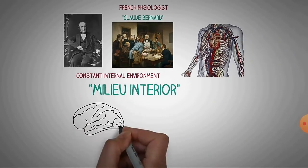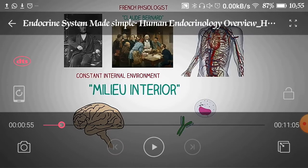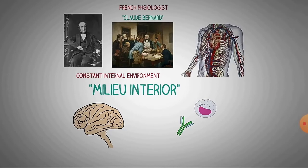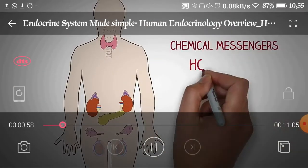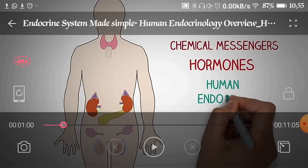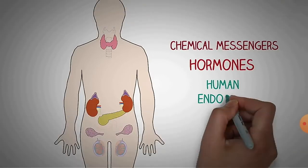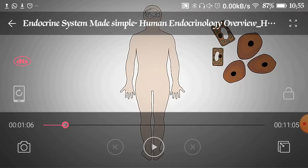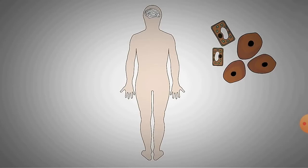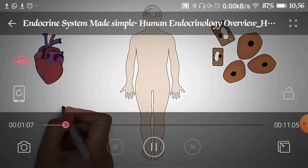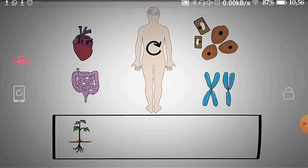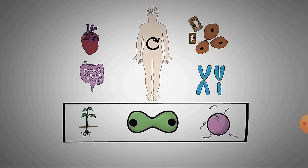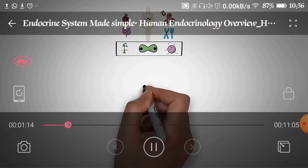The body maintains its internal environment automatically, and this was new for the whole world. The brain is involved, especially the hypothalamus, through which the body maintains the immune system, various reproductive systems, and chemical messengers like hormones. The human endocrine system is able to release various types of hormones. For example, the beta cells of islets of Langerhans and gonad cells release various hormones. The endocrine system controls our heart, metabolism, growth, sexual determination, differentiation, development, and reproduction.